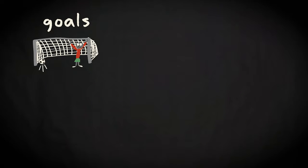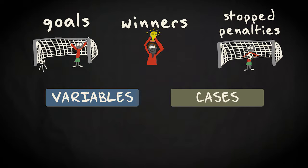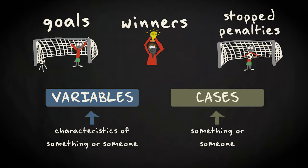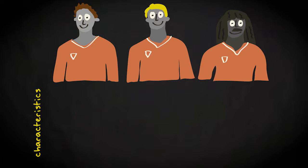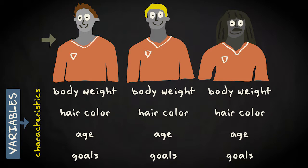The number of scored goals, won games, and stopped penalties are all pieces of information that can be thought of in terms of variables and cases. Variables are features of something or someone, and cases are that something or someone. Imagine you are interested in characteristics of football players belonging to your favorite team. Of every single player, you want to know their body weight, hair color, age, and total number of goals scored during the most recent competition. All these player characteristics are variables. The players themselves are cases.